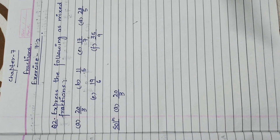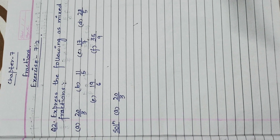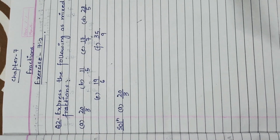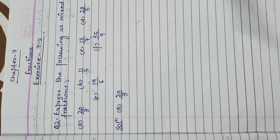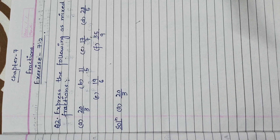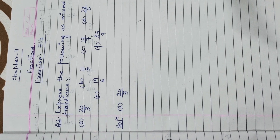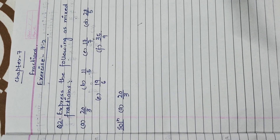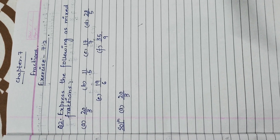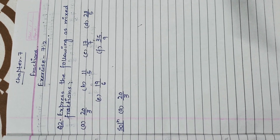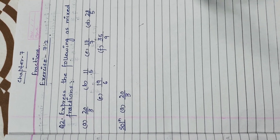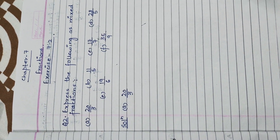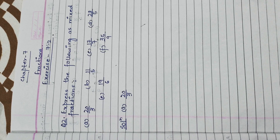Hello everyone. Today we are starting with question number 2 of Exercise 7.2, Chapter 7: Fractions. The question asks us to express the following as mixed fractions. As you can all see, the given fractions are all in improper form.